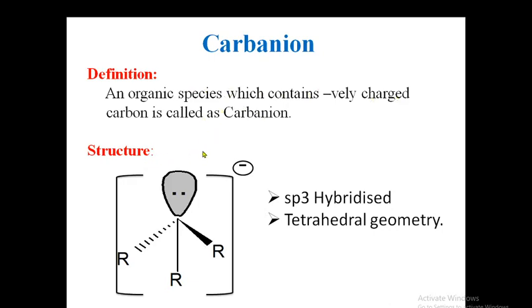Let's see the structure of the carbanion. In carbanion, carbon is sp3 hybridized. Carbon is tetravalent, so three groups are oriented at the corners of a regular tetrahedron, and it contains a p orbital which holds an unshared electron pair. Therefore it has a negative charge — it is an electron-rich species — and carbanion has a tetrahedral geometry.